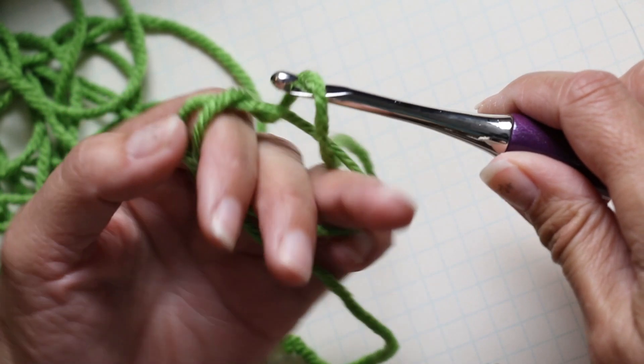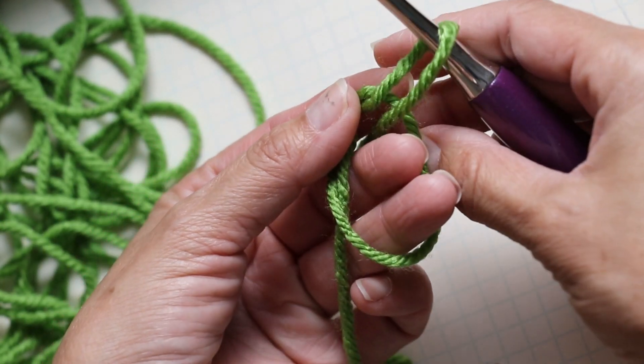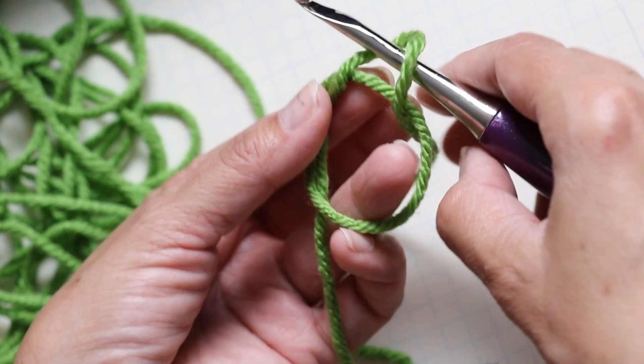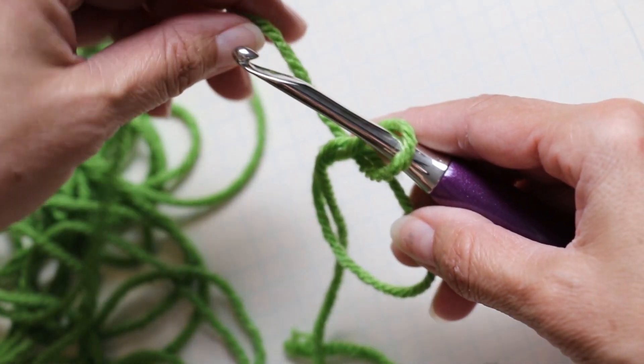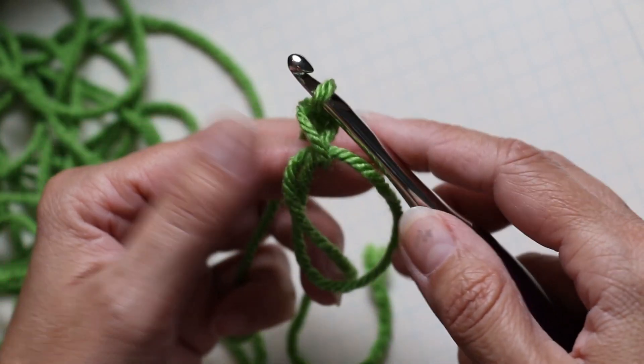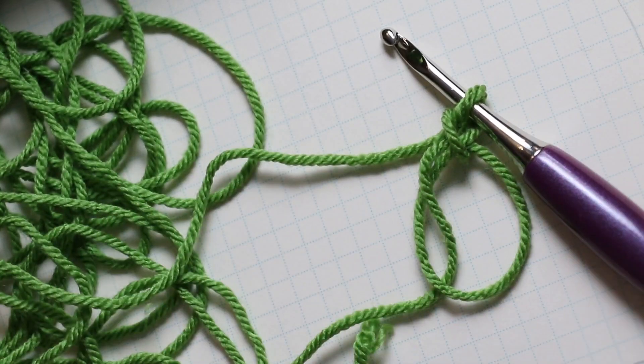Now what I do at this step right away, because this can get really crazy, is hurry up and take my working yarn. Yarn over and pull through. This pretty much stops it and keeps it together.